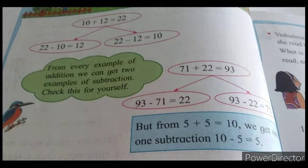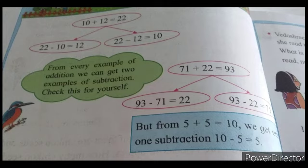Now see the next example: 71 plus 22. Do the addition — the answer is 93. From this example, we can make two subtraction examples. Take the bigger number, 93. First: 93 minus 71, the answer is 22 — the remaining number. Like that, another example: 93 minus 22, and the answer will become 71.